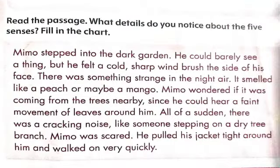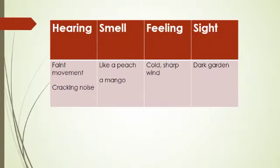Read the following passage given on page 29. What details do you notice about the five senses? Here are four columns regarding senses. In the first column, words related with hearing are mentioned. In the second column, the words related with smell are mentioned. The third column contains words related with feelings. The words related to sight are placed in the fourth column.